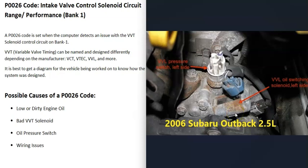If you have a 2000s Subaru, be on the lookout for this oil pressure switch that controls the variable valve timing solenoid. Subaru names their system variable valve lift on these engines, but the oil pressure switch principle applies similarly.